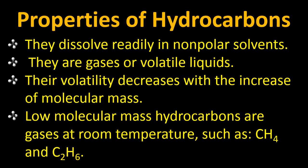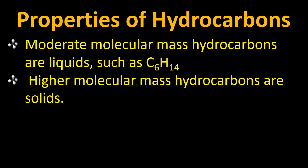When molecular mass increases, how could they volatilize or evaporate? With increasing molecular mass, their size increases and they convert from gas to liquid, and from liquid to solid — and it is more difficult to evaporate a solid than a gas. That is why volatility decreases with increasing molecular mass. Low molecular mass hydrocarbons like methane and ethane are gases at room temperature. As molecular mass increases, they become liquids such as C6H14 (hexane). Higher molecular mass hydrocarbons are solids.